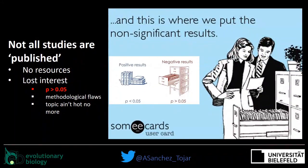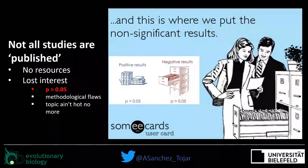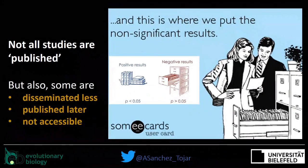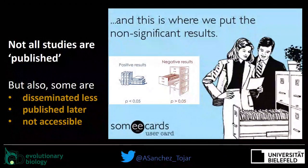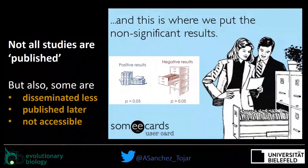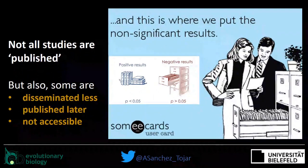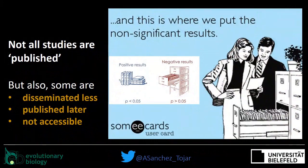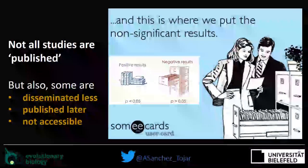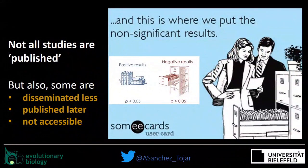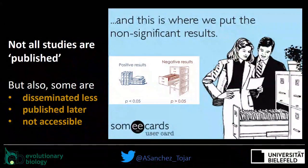Normally we associate publication bias with results — the file drawer problem, where statistically non-significant results seem to be less available in the literature than statistically significant ones. But it's not only that. There are also dissemination biases, where some results are disseminated more than others, creating bias in how the truth is perceived by readers. Some studies might be published earlier or later, and some results might be less or even non-accessible — certain results could be less well reported and therefore less accessible for synthesis.